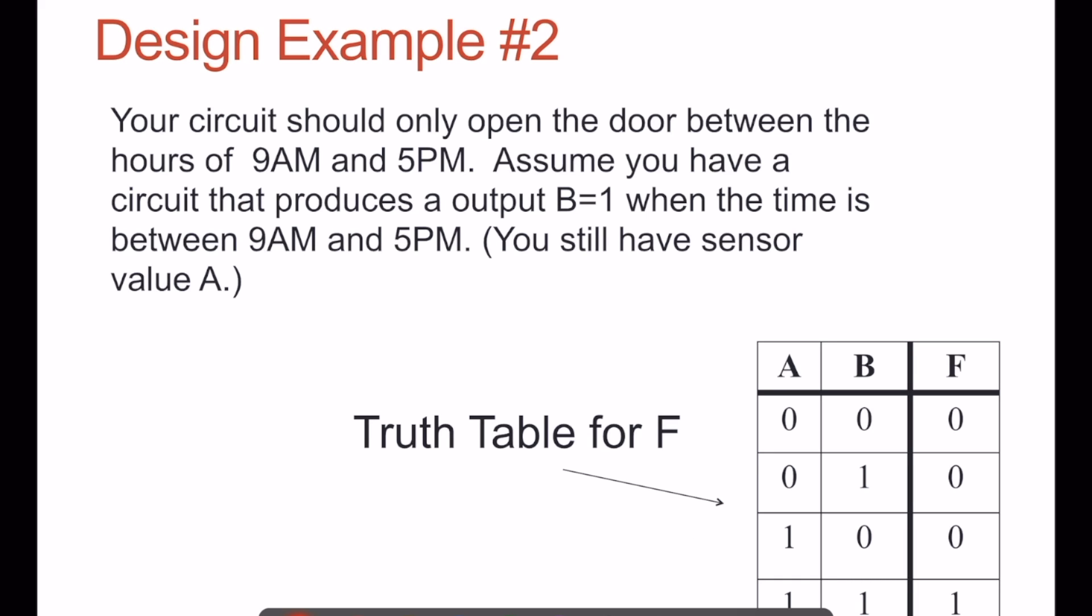Let's look at a little more complicated example. Suppose we're now going to add some kind of a circuit that can tell time, and we'll output a true value, a 1, when the time is between 9 a.m. and 5 p.m. And we will have that output of that sensor called B.